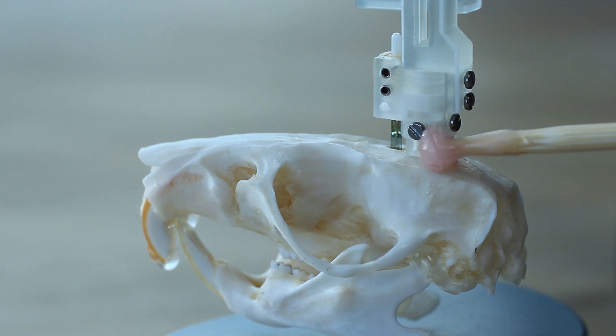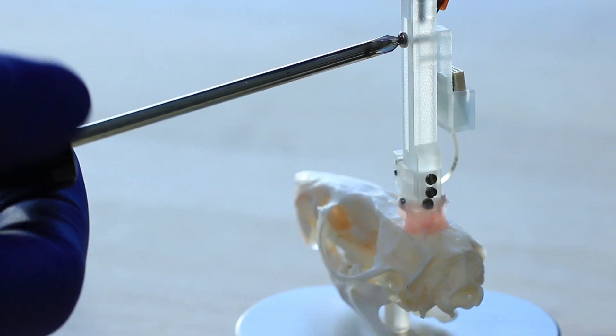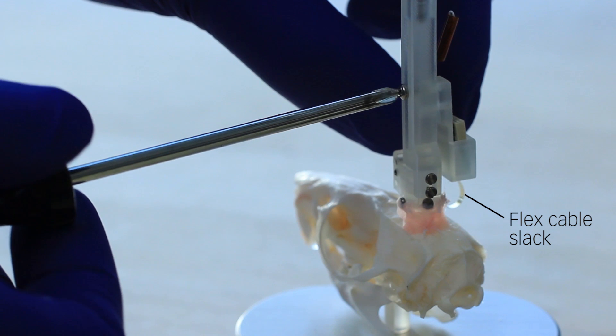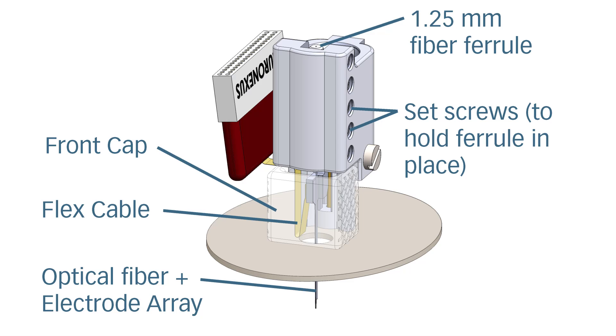Apply a small amount of cement to the back side of the O-Drive, being careful not to touch the electrode array. Create slack in the flex cable by lowering the connector holder. Please note that cable slack is required for the probe to move up and down freely.